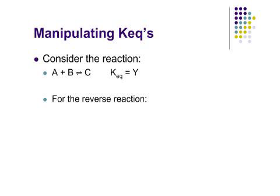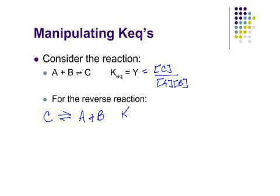Let's talk about what happens if we write a reaction backwards. So we just looked at this equation. We know that KEQ was equal to C over A times B. If we have the reverse reaction, so we now write C as our reactant in equilibrium with A plus B, the KEQ we get for this, I'll call it K prime, equals A times B over C.